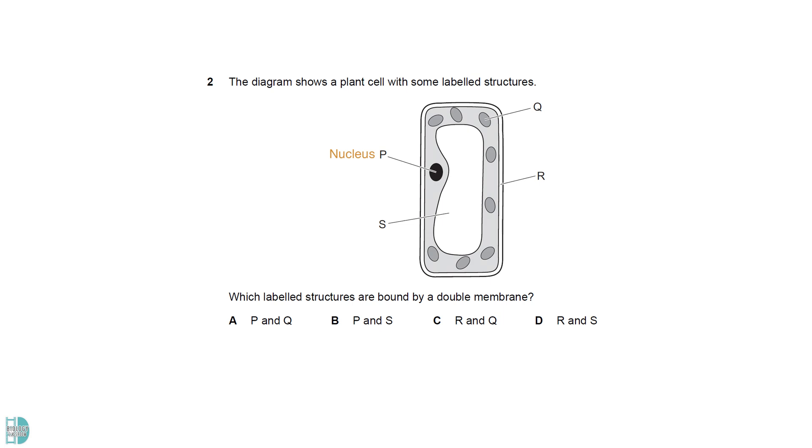P is the nucleus, Q is a chloroplast, R is the cell wall, S is the vacuole. Nucleus, chloroplast and mitochondrion are double membrane organelles, so the answer is P and Q.